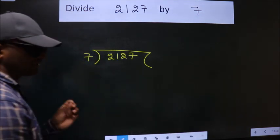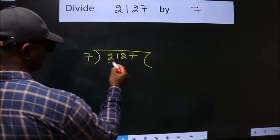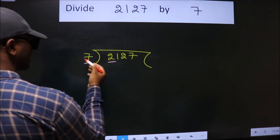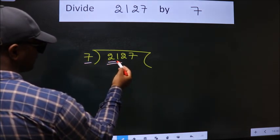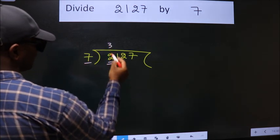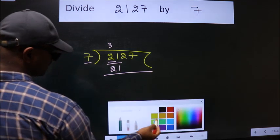This is your step 1. Here we have 2. 2 is smaller than 7, so we should take two numbers: 21. When do we get 21 in the 7 table? 7 times 3 is 21. Now we subtract and get 0.